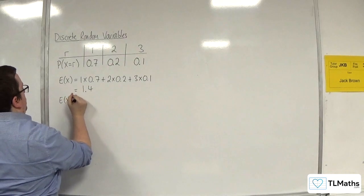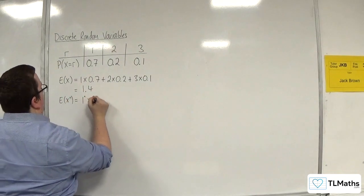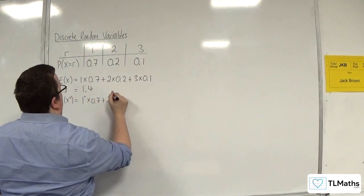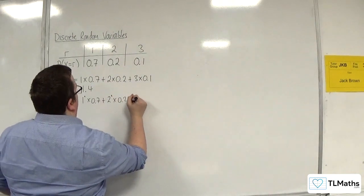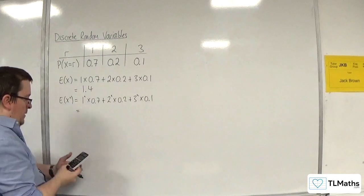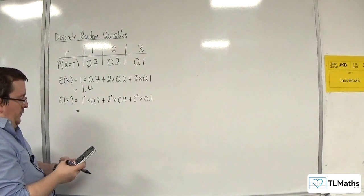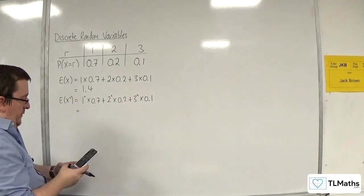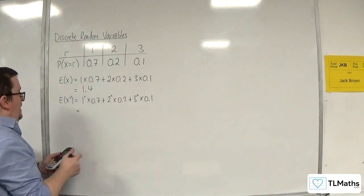E of x squared is 1 squared times 0.7, plus 2 squared times 0.2, plus 3 squared times 0.1. So 0.7 plus 4 lots of 0.2 plus 9 lots of 0.1, and we get 2.4.